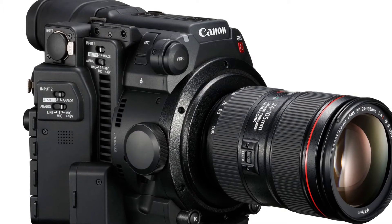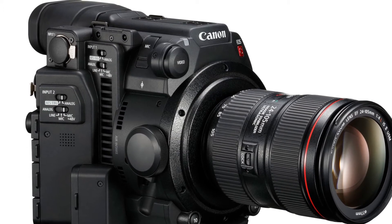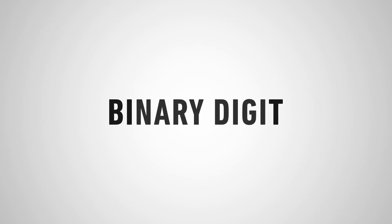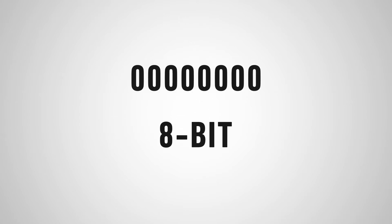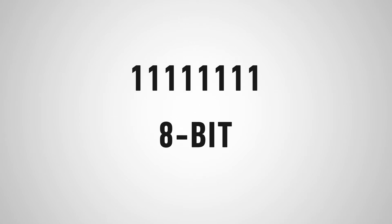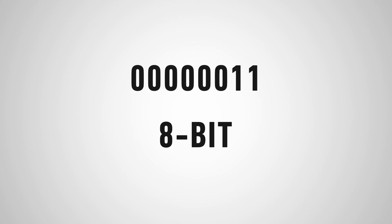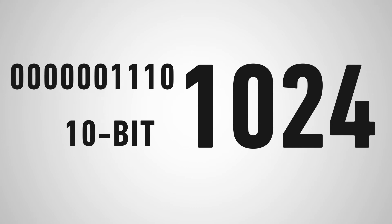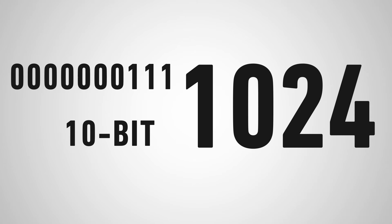Let's take a look at what 10-bit 4:2:2 actually means. The term 'bit' is short for binary digit. Binary is a representation of numbers using two statuses: 0 and 1. An 8-bit number can hold 256 different combinations of zeros and ones. When you add two more digits, resulting in 10-bit, you can store 1,024 different combinations — which is much more than 8-bit.